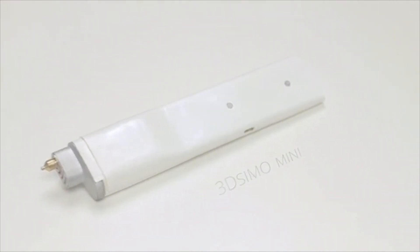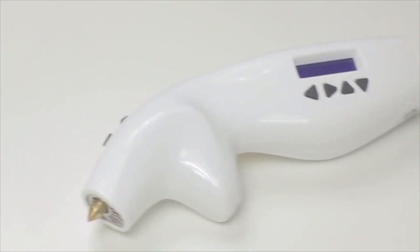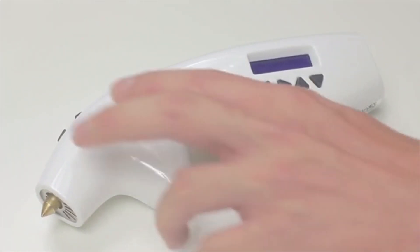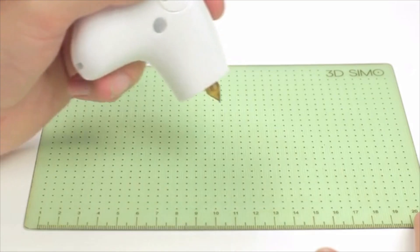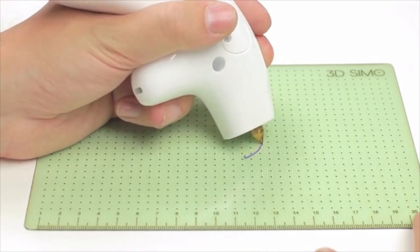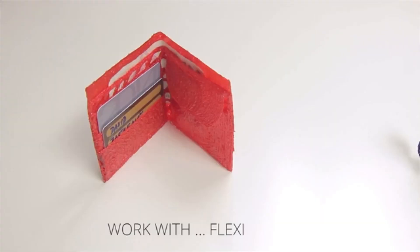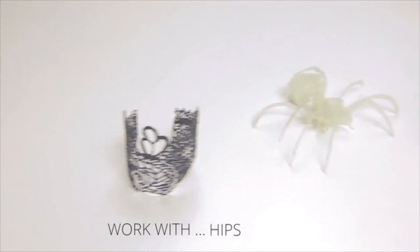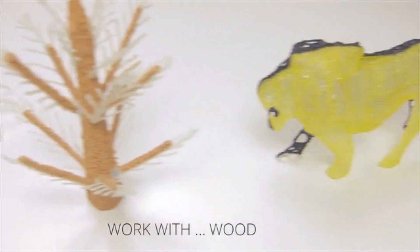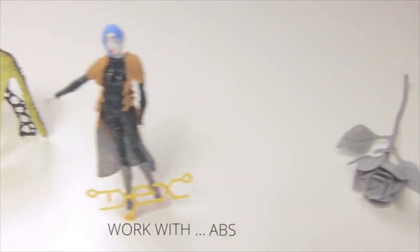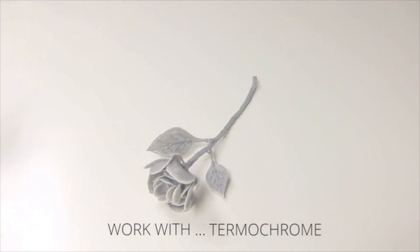It all started in 2013 with our first product, the original 3D Simo. It's the very first multi-material 3D pen in the world. You can set the speed, temperature and also choose from the default material profiles. You can draw with a variety of materials, including flex, fluorescence, lay wood, transparent, thermochrome, decomposable materials and so on.